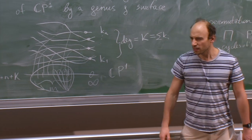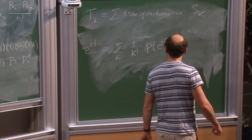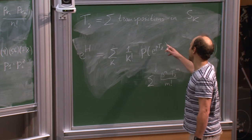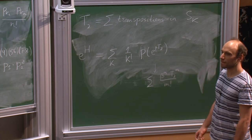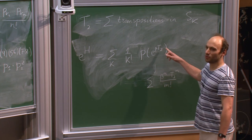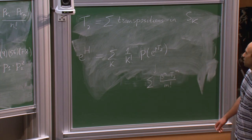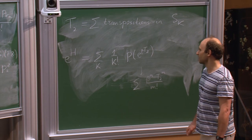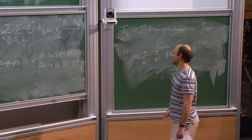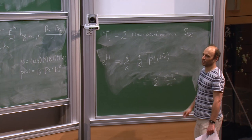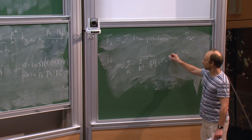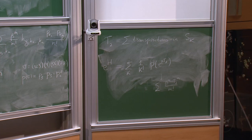There is a notational issue: T₂ depends on K since it lives in the symmetric group S_K. However, P(σ) is well-defined for any size of σ. So T₂ should really be understood as living in the direct sum of group rings of all symmetric groups — it is what is called a stable conjugacy class. The sum of transpositions exists for any K, making this a universal expression.